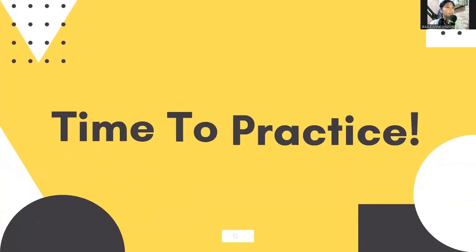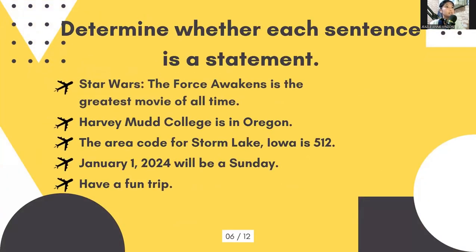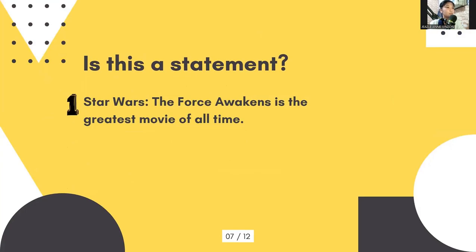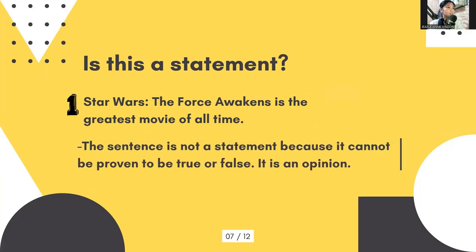For further understanding, let us have some more examples. Determine whether each sentence is a statement. The sentences are given in advance and I will give you five seconds before I flash the answers. Number one: Star Wars — The Force Awakens is the greatest movie of all time. The sentence is not a statement because it cannot be proven to be true or false. It is an opinion.